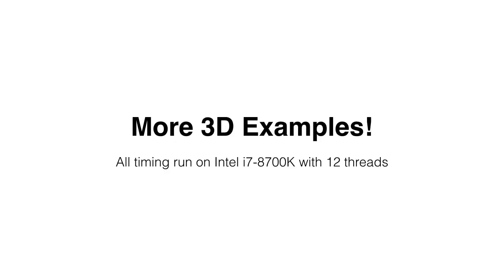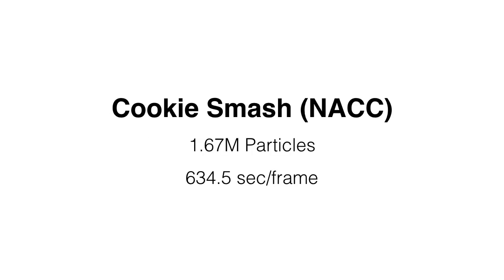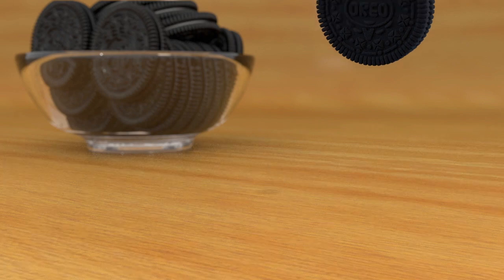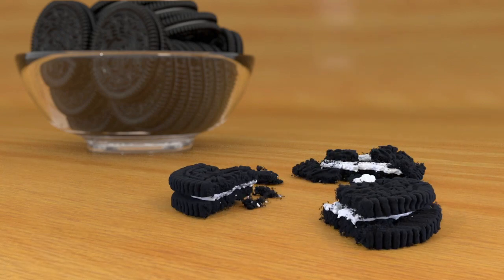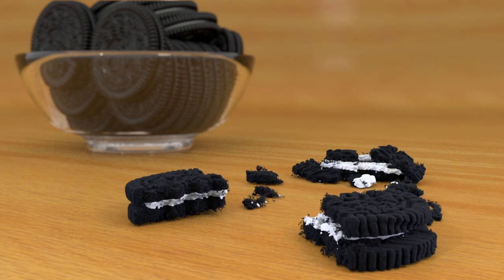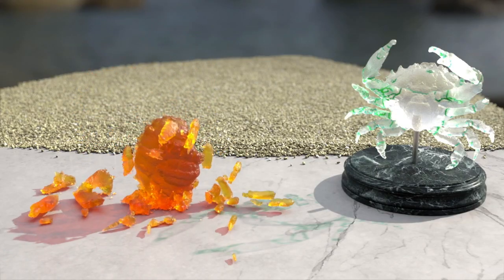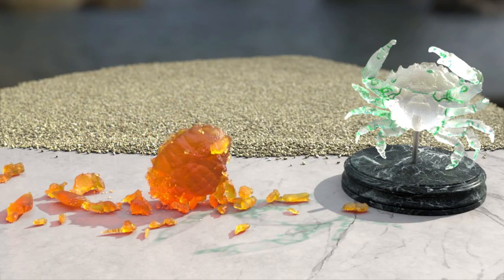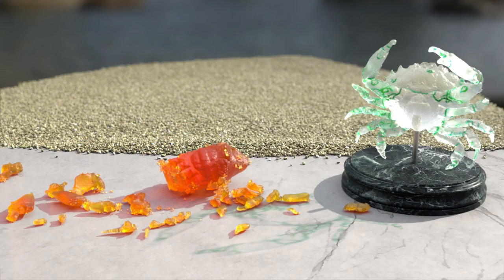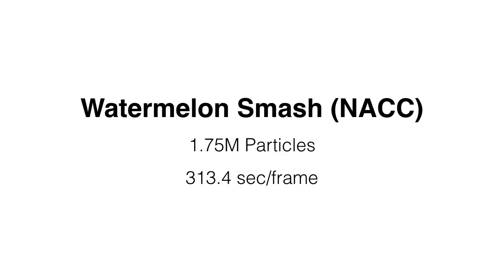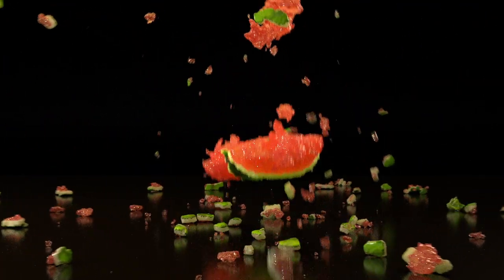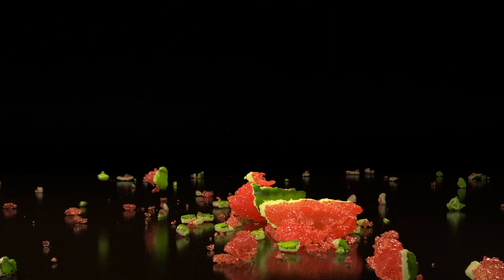Now we show some more 3D examples. We begin by showing some food destruction using NACC plasticity. Here, a sandwich cookie is dropped on the ground. Next, we smash a candy crab and visualize the NACC hardening parameter in material space at right. This multi-material watermelon is thrown at the ground at high speed, breaking into many pieces.